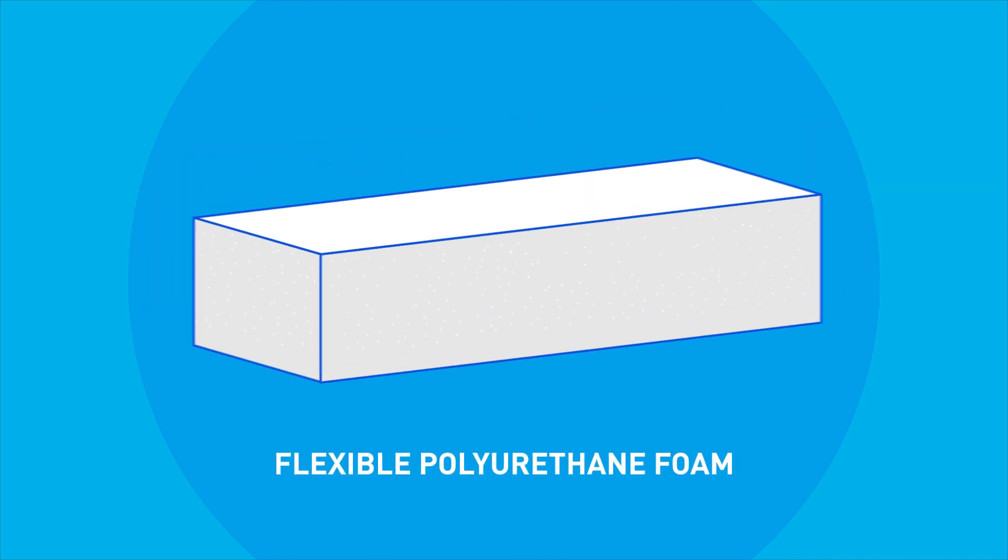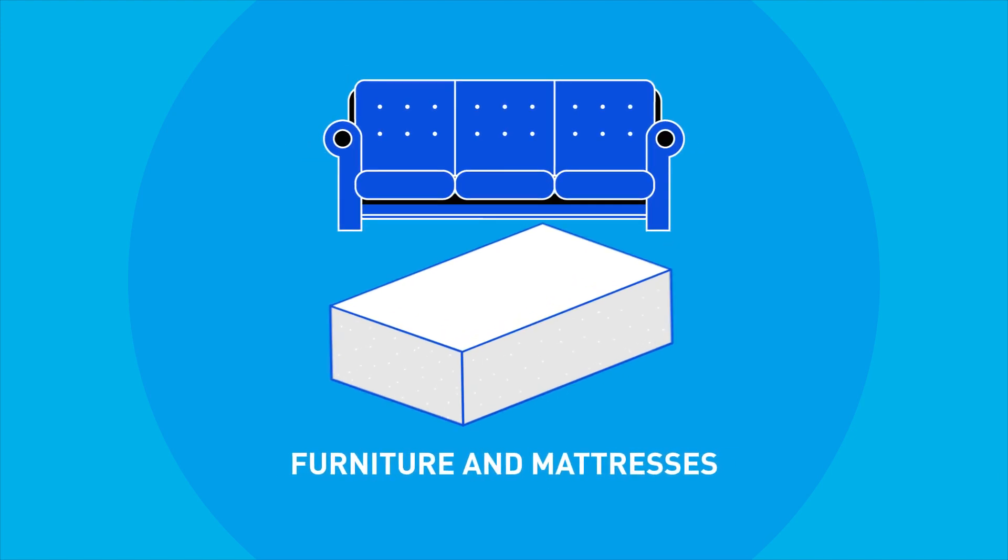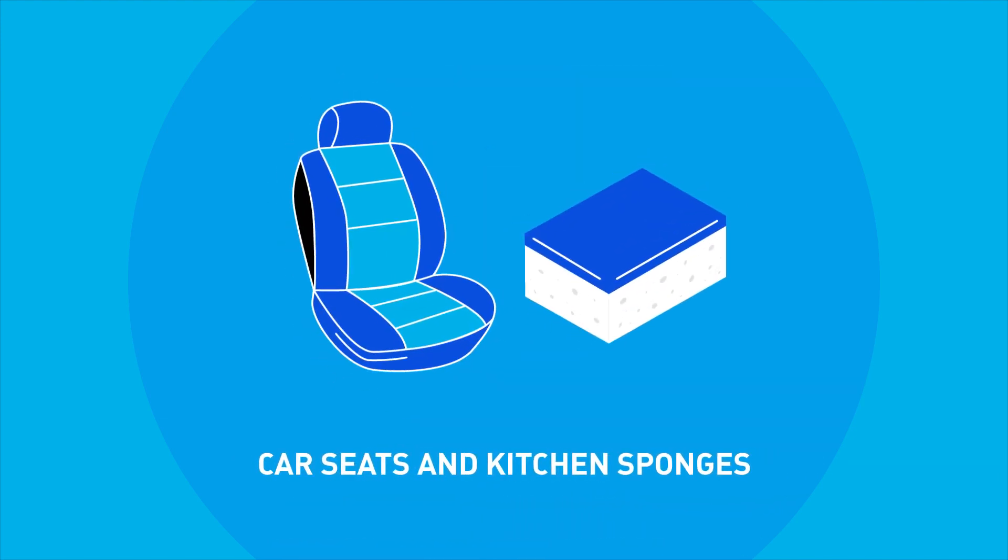Flexible polyurethane foam can be found in all aspects of our daily life, from furniture and mattresses to car seats and kitchen sponges.